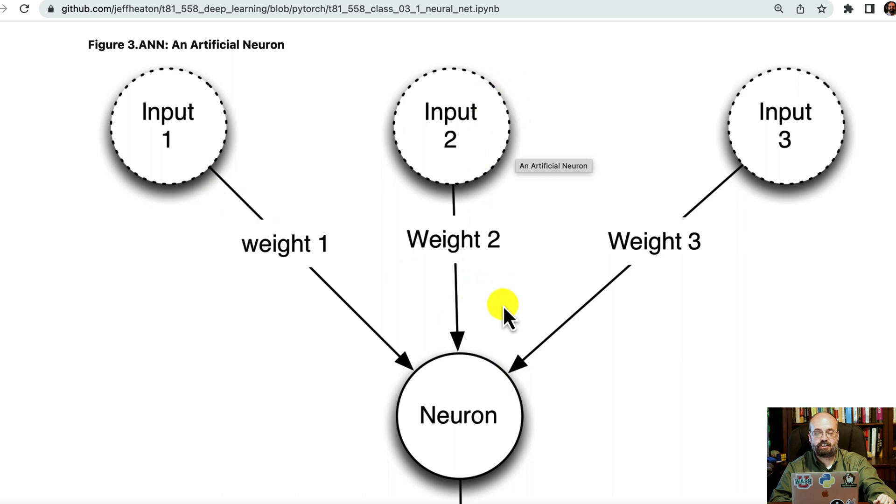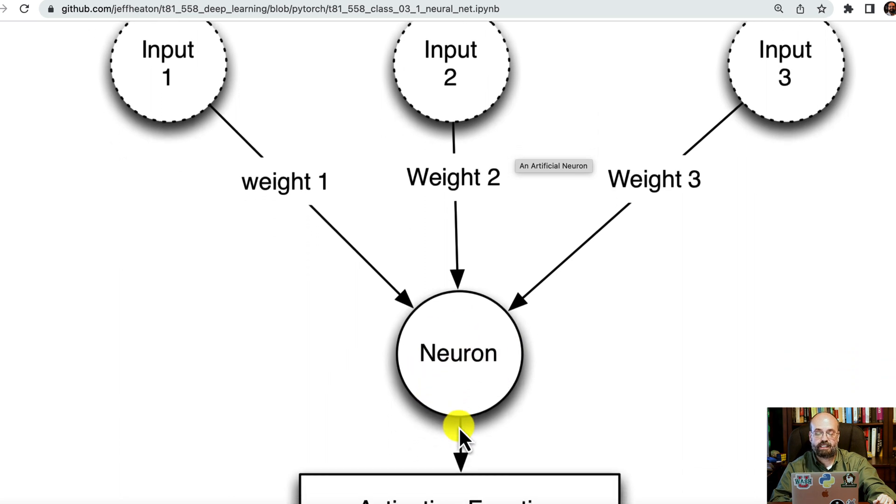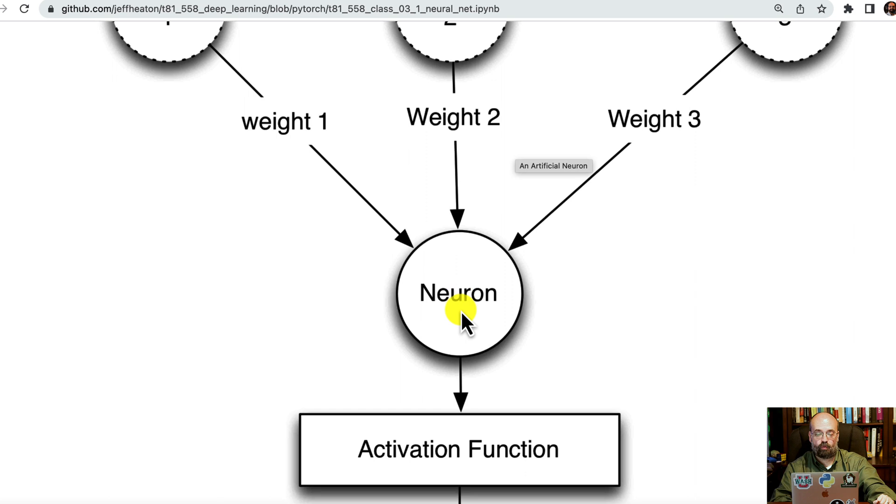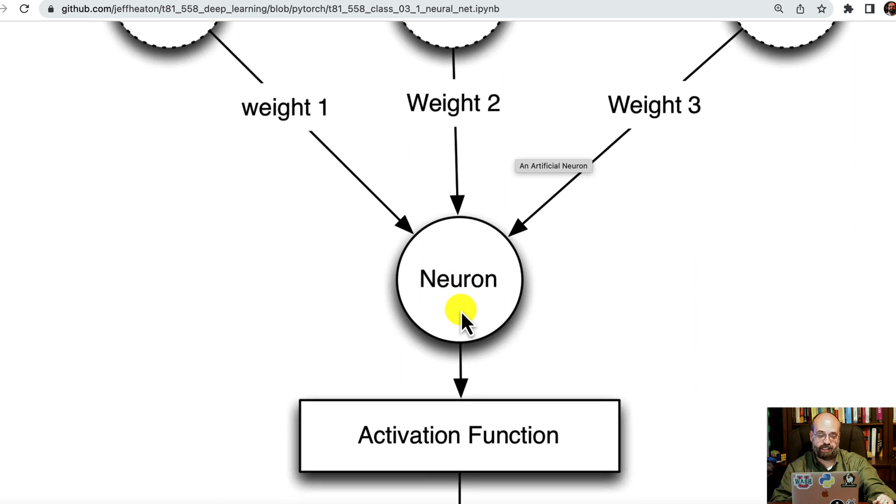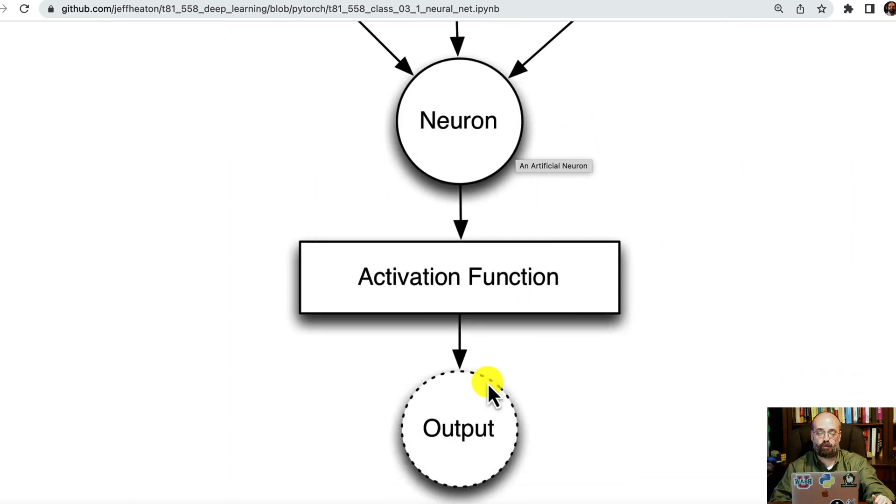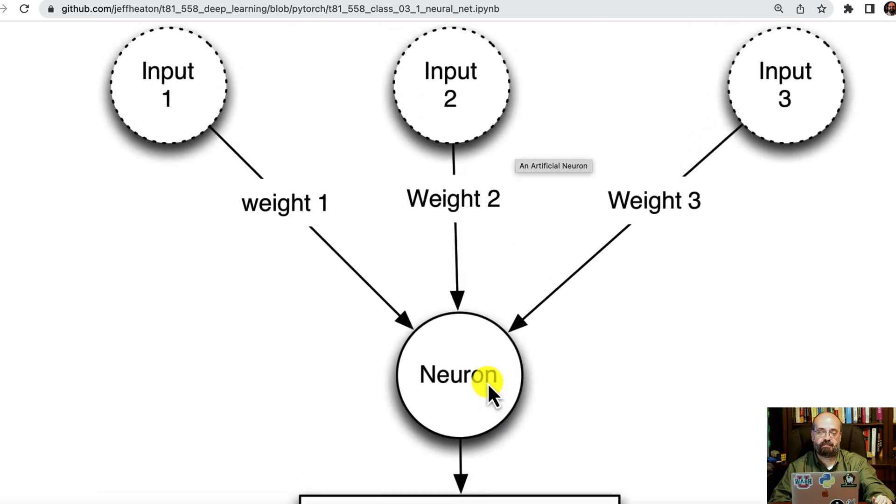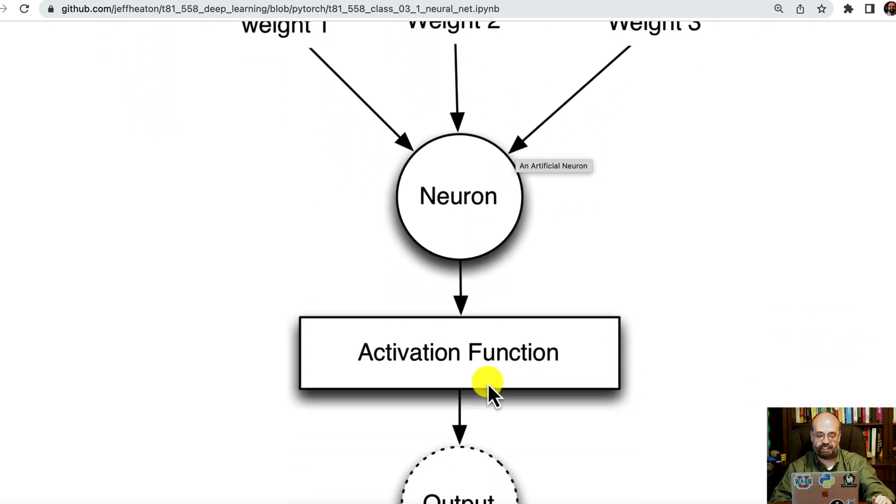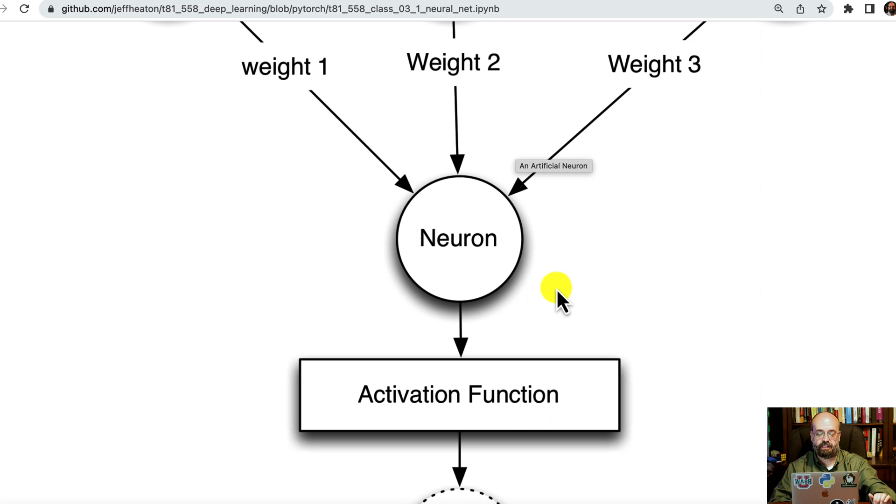And each of these connections are going to go to a neuron in the next layer. And this neuron, you can really think of it as a summation. It is taking the inputs, the weighted inputs, and summing them together, running that through an activation function, which gives it non-linearity so that you can deal with things that don't just line up in a straight regression line. Then the output. So this is your most simple construct that you will see when dealing with these neural networks.